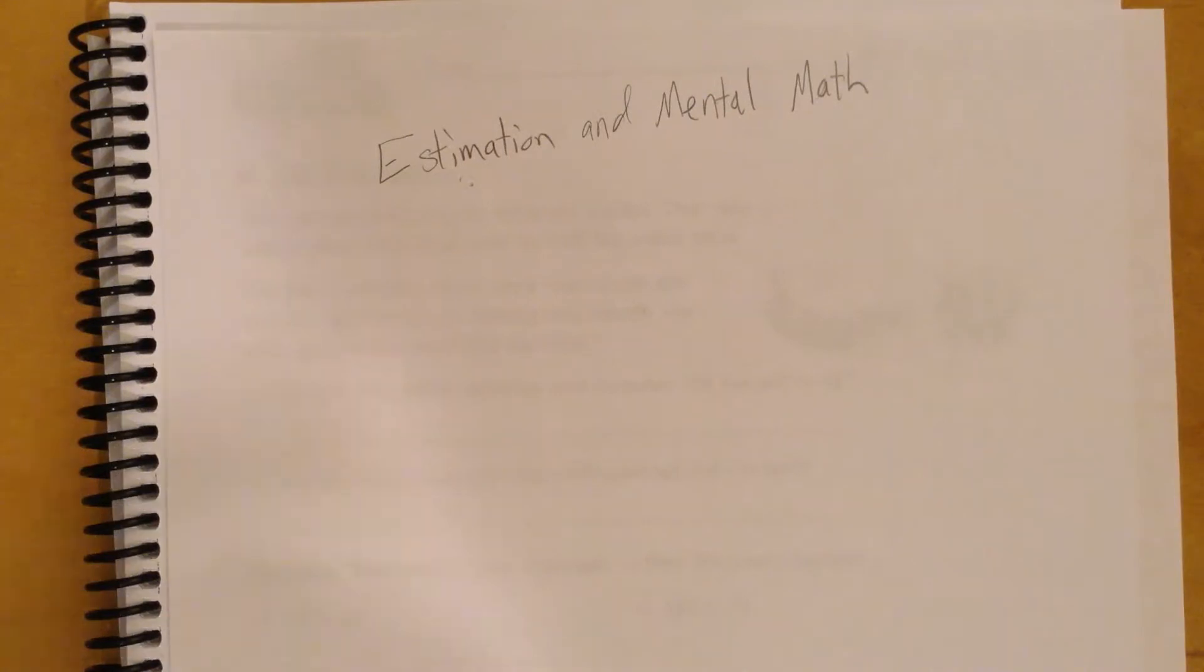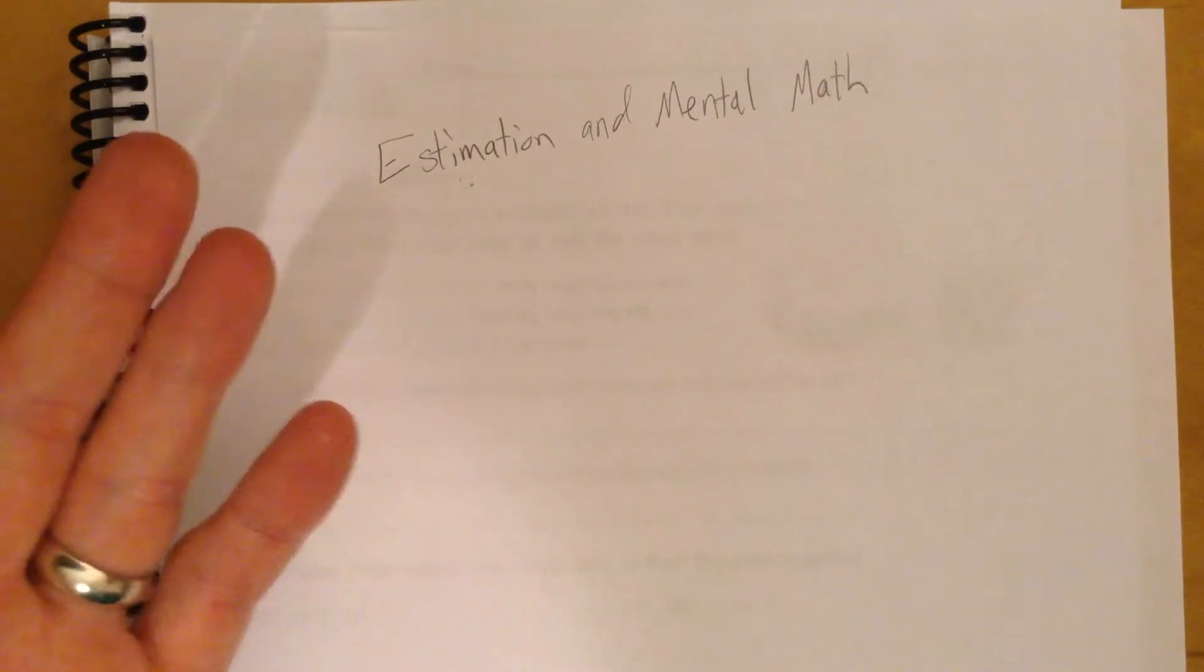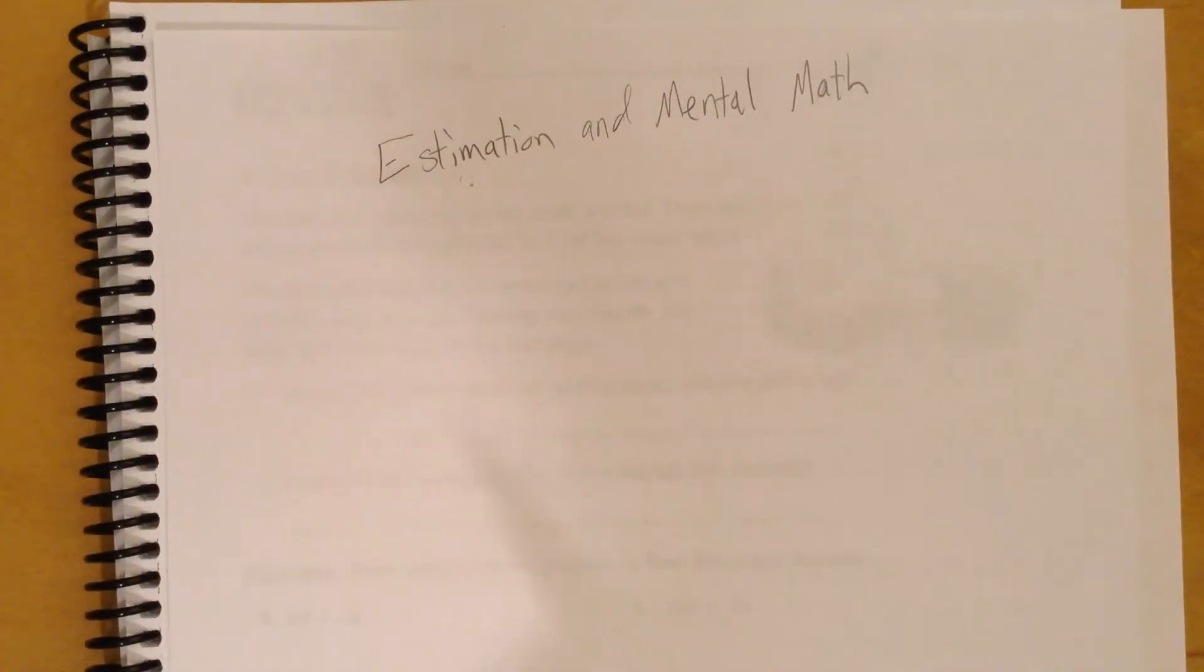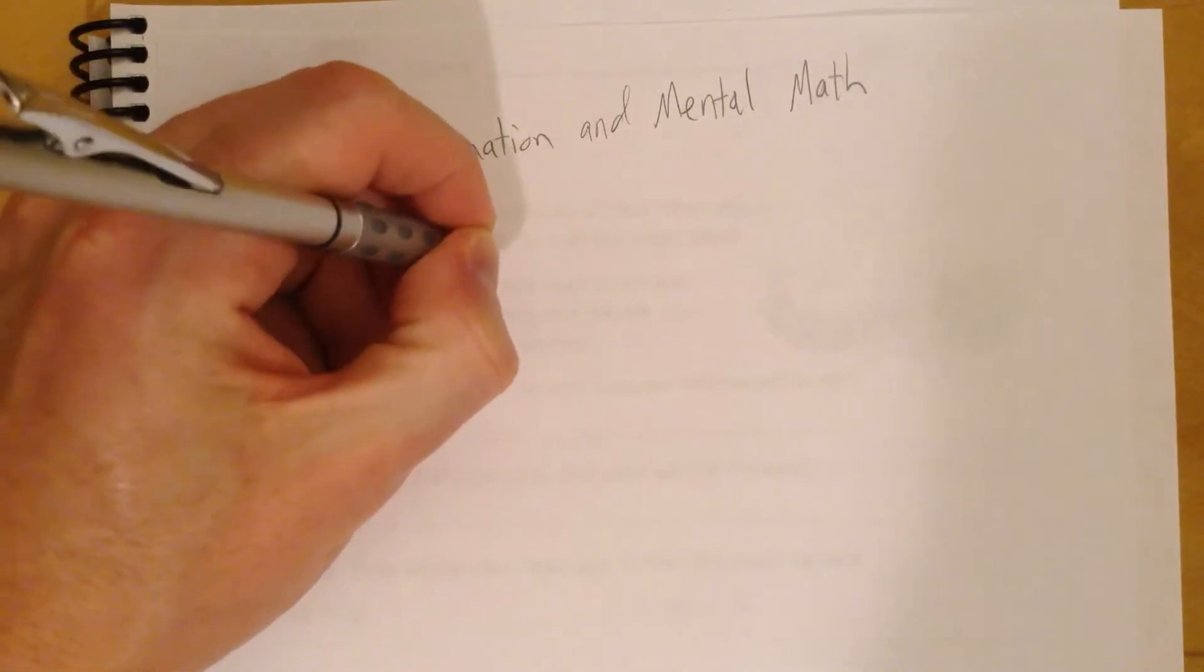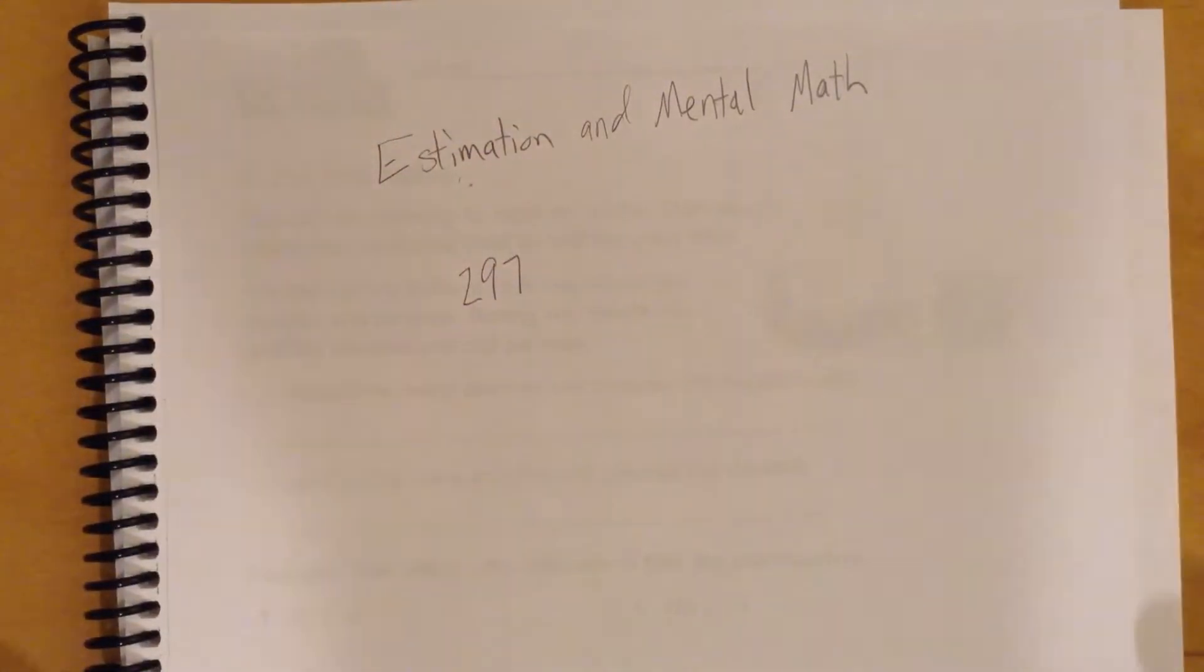So estimation is very similar to rounding. It's where you see what number the number you're working with is close to. So for example, we have 297. So I want you to think, what number is that really close to, okay?